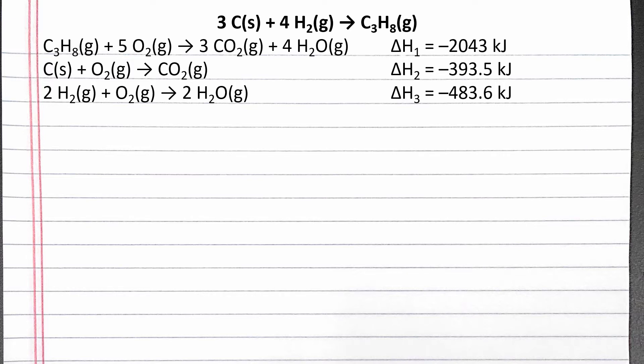For example, solid carbon only shows up in the second reaction, so we know all of the solid carbon in the overall reaction must come from the second given reaction. We want three moles of solid carbon as a reactant in our overall equation, but the second equation only has one mole of solid carbon as a reactant.